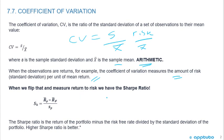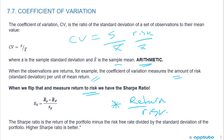If we flip that to return-to-risk, we get the Sharpe ratio. The Sharpe ratio is the return of the portfolio minus the risk-free rate divided by the standard deviation of the portfolio. A higher Sharpe ratio is better because we want more return relative to risk.